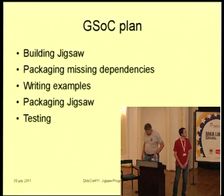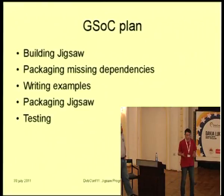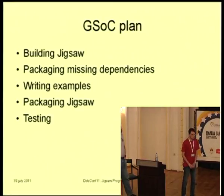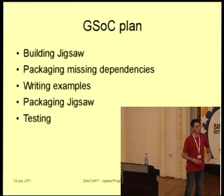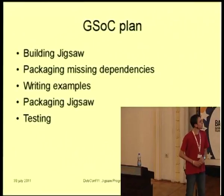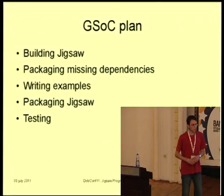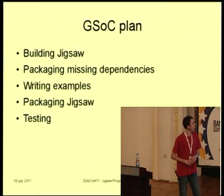As you know now, Jigsaw has been selected as one of the Google Summer of Code projects in Debian. I'm working on it and I'm still working on it now. We divided the Google Summer of Code into five parts, and we're actually at the third part. The first part of my work was to know how to build Jigsaw. Then we packaged some missing dependencies and sent them into the archive. We also wrote some examples on how to use Jigsaw. And then we are going to package Jigsaw and test it in Debian.